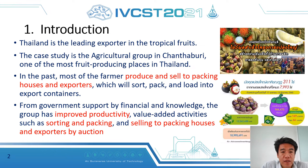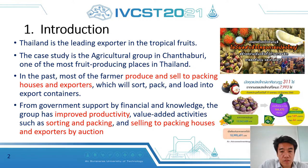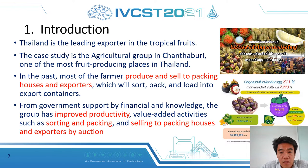Let's start with the background and significance of the study. As we all know, Thailand is the leading producer and exporter of tropical fruit, more than 2.5 billion tons per year. This case study is an agricultural group in Chantaburi, one of the most productive food-producing places in Thailand. The group was established in 2016, and the main product is the mangosteen.